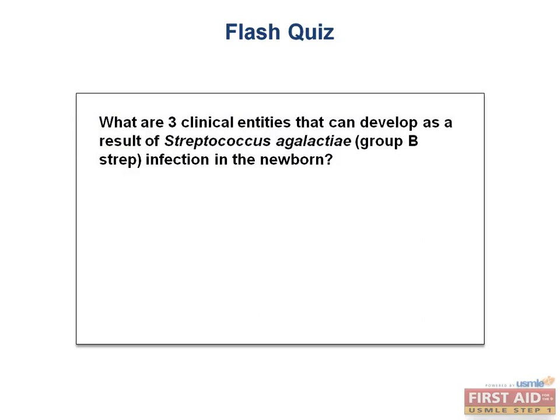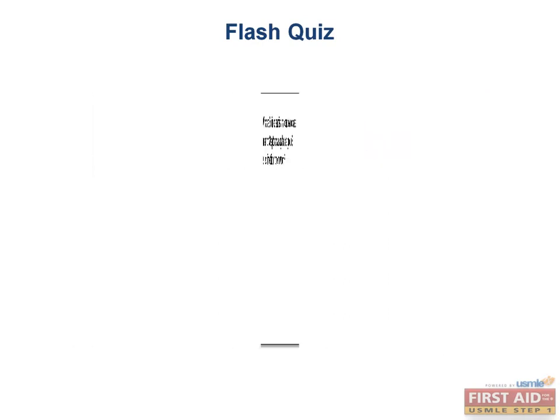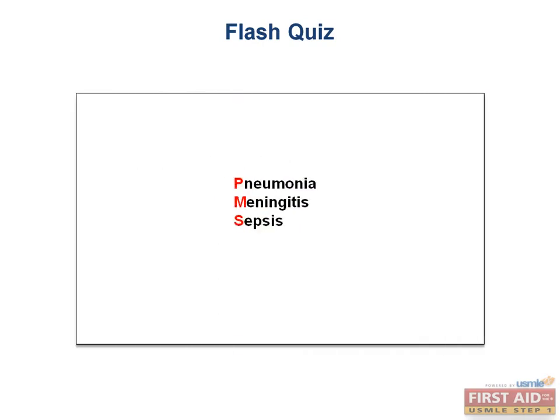Flash quiz: what are three clinical entities that can develop as a result of Streptococcus agalactiae infection in the newborn? The answer: pneumonia, meningitis, and sepsis.